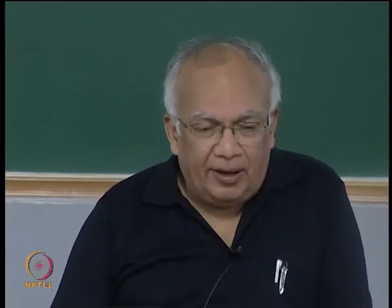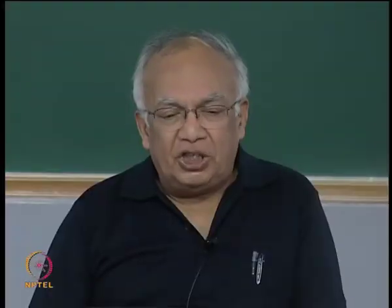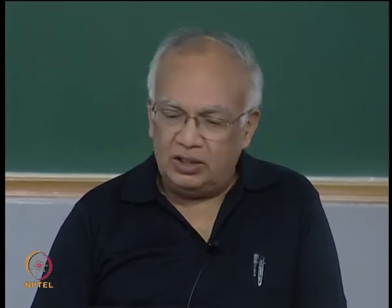We will arrive at the Cooper-Zare formula for angular distribution of photo electrons. I will not derive it in very great detail, but I will certainly outline the essential points which lead us to what is famously known as the Cooper-Zare formula for photo electron angular distributions.